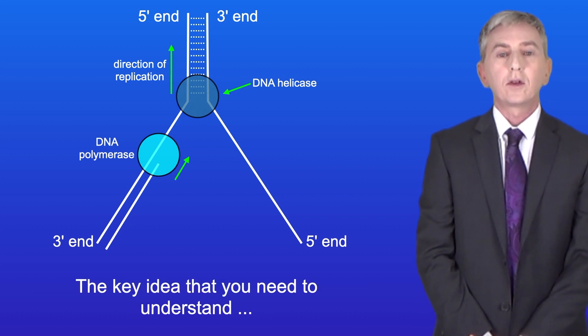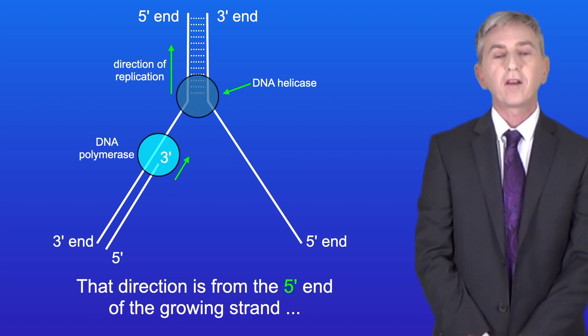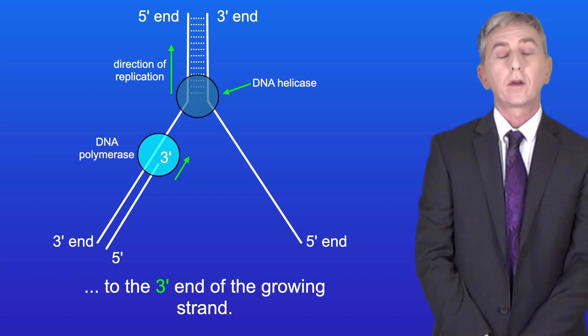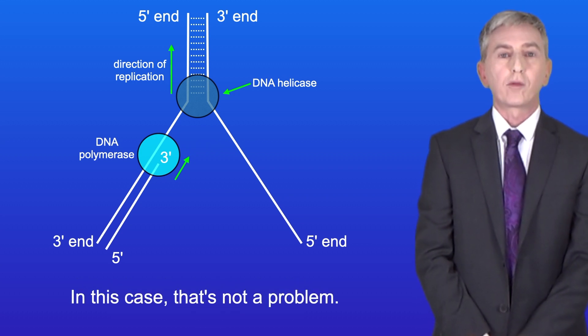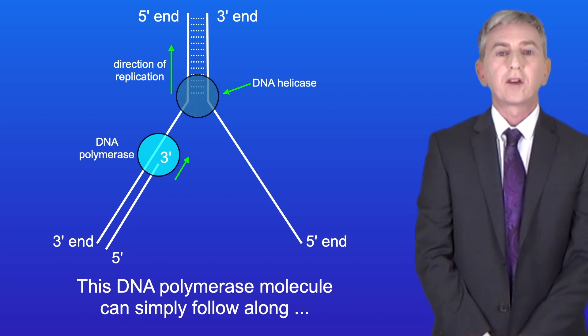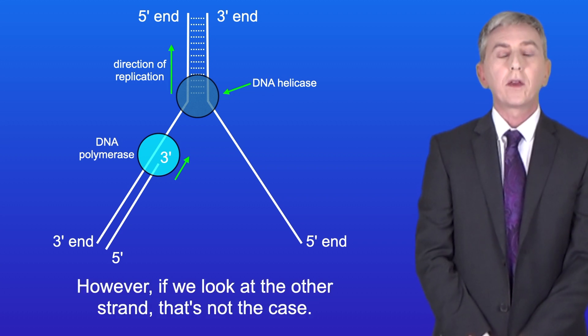Now the key idea you need to understand is that DNA polymerase can only copy in one direction, and that direction is from the 5' end of the growing strand to the 3' end of the growing strand. Now in this case that's not a problem. This DNA polymerase molecule can simply follow along behind the DNA helicase. However if we look at the other strand that's not the case.